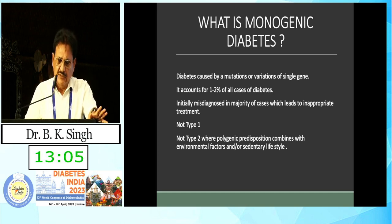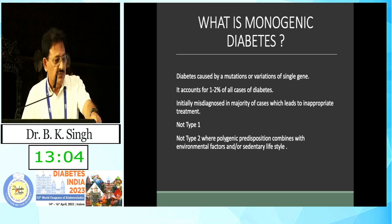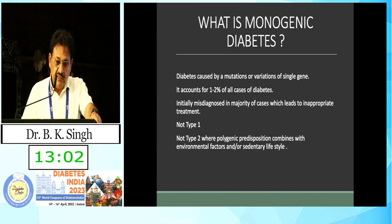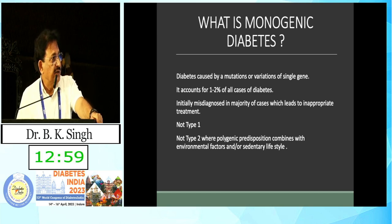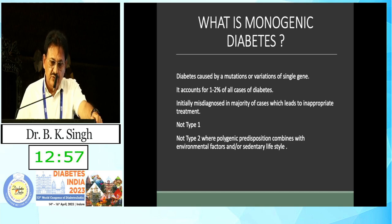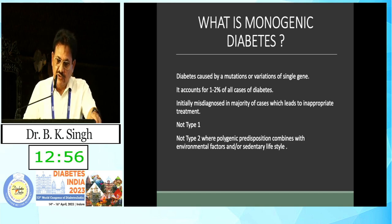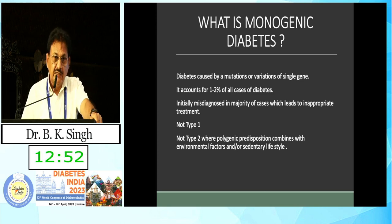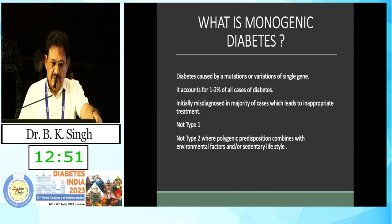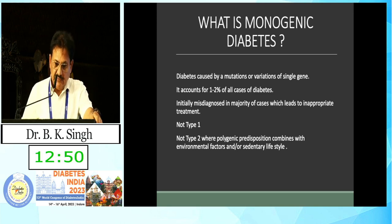Mostly it is initially misdiagnosed in the majority of cases, and this leads to inappropriate treatment of the patient. Monogenic diabetes is not like type 1 diabetes or type 2 diabetes. Type 1 and type 2 diabetes are polygenic, influenced by environmental factors and sedentary lifestyle changes.